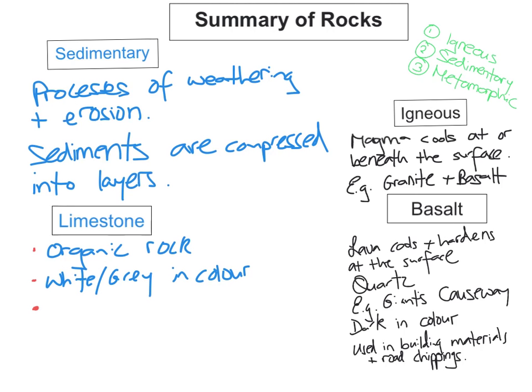It's a permeable rock. So permeable means water can pass down through it. If it's impermeable, it means water cannot get down through it. So this is a permeable rock, so water can pass down through the rock and seep down through it. It may contain fossils.